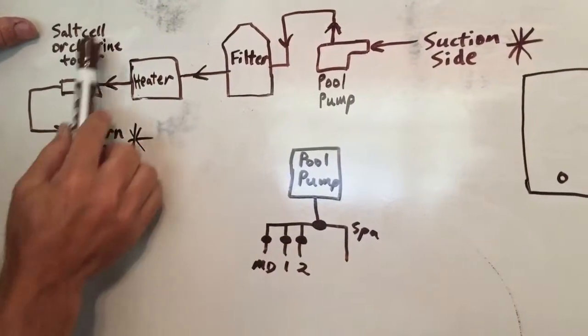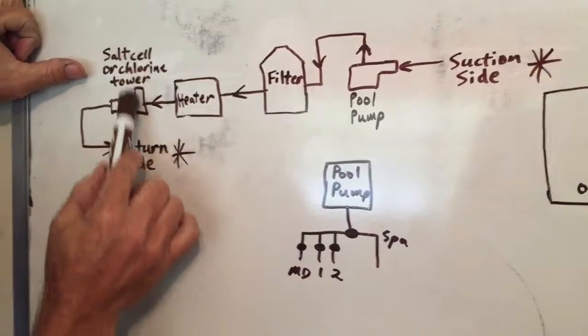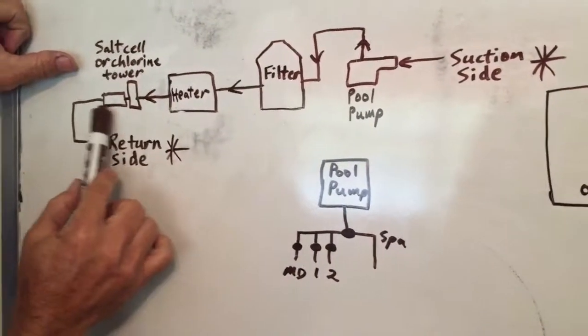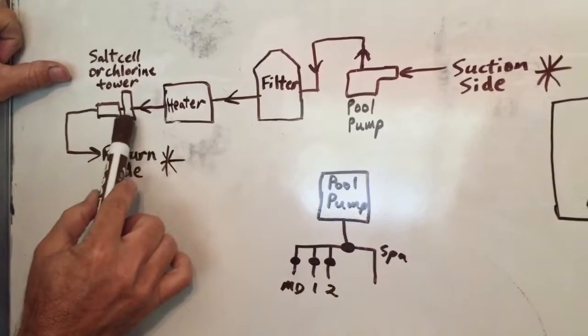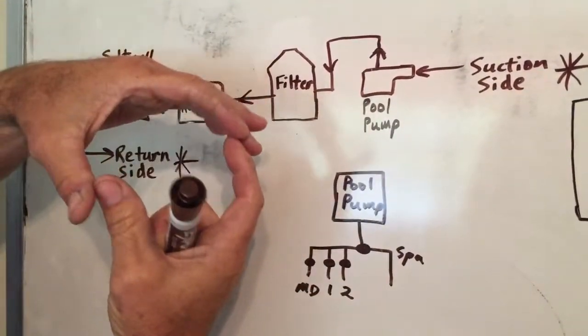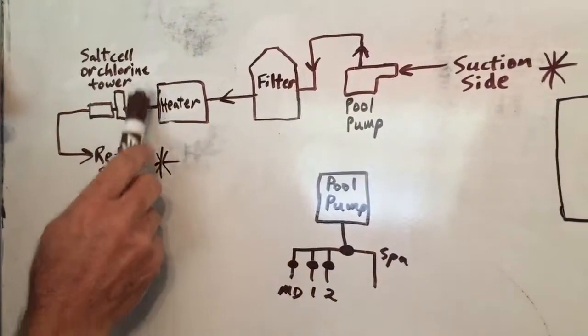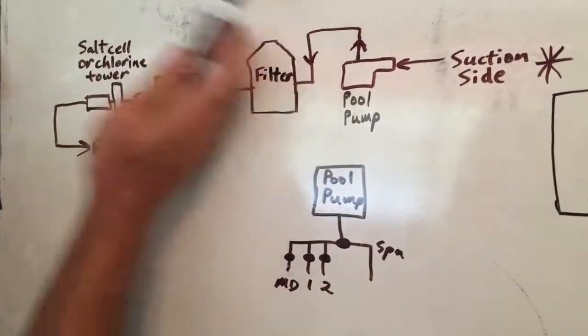And then now you're going to, it's either going to be a salt cell pool, so a salt water pool, or you're going to have some sort of a chlorine tower. The salt cell is usually mounted horizontally like this in the piping. If it's a chlorine tower, that's where you have the three inch tablets that you put in this little tower with a little control dial on it. And then it slowly dissolves those tablets to give it some chlorine.